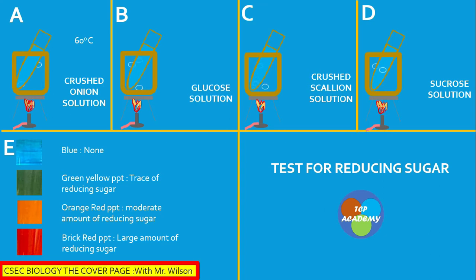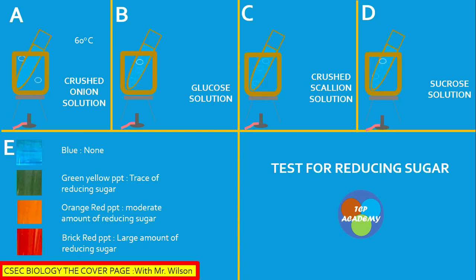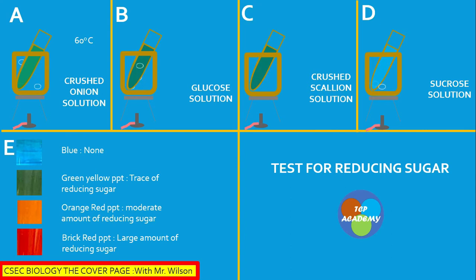If reducing sugar is present, we expect to see an orange color, and if the test continues, it will show a red precipitate. It's very important to time this experiment and maintain the temperature above 60 degrees Celsius. Pay attention to the screen as color changes occur, and record all color changes in your table as you document your observations.